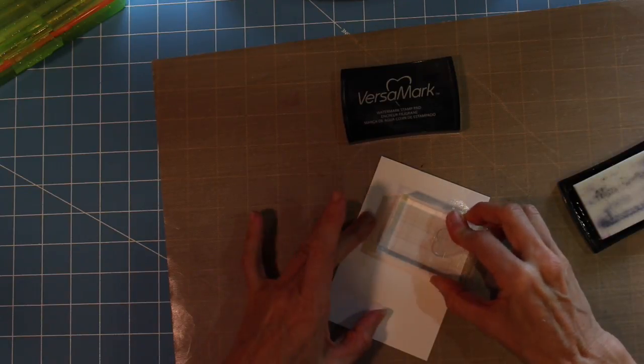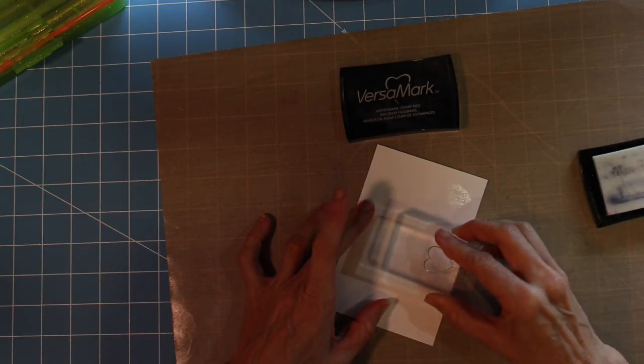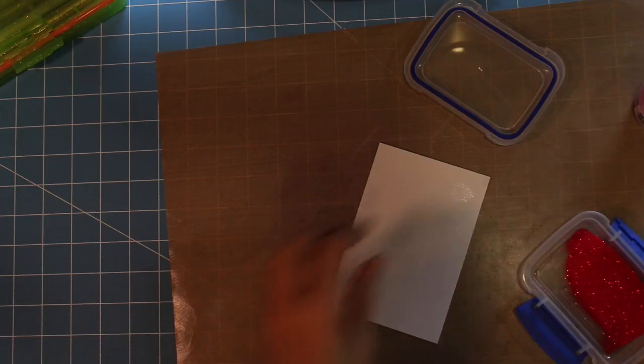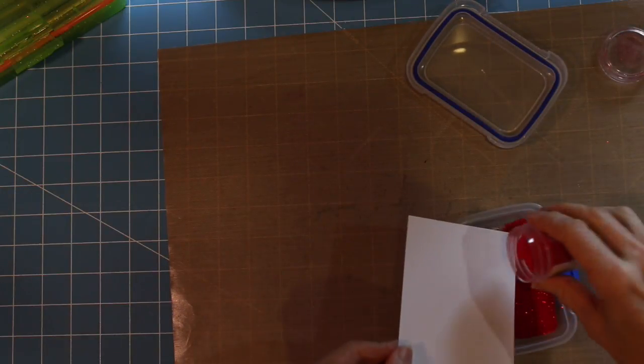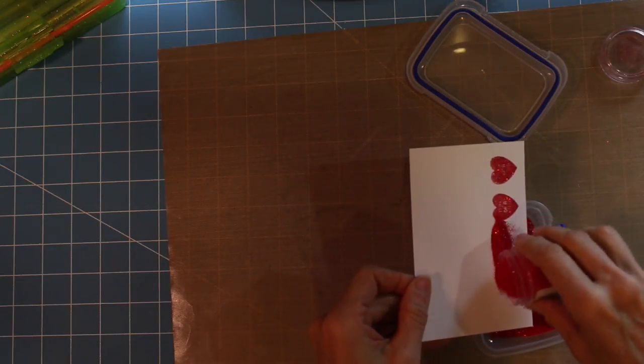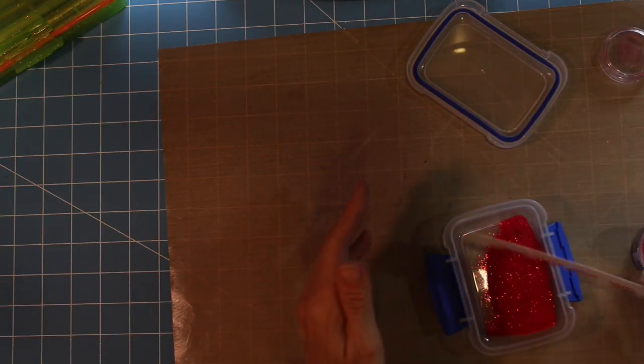I'm going to stamp out the images on my card using VersaFine ink, and I'm creating several hearts that I'm going to use on this project. I'll have plenty for other projects. I'm using the red tinsel embossing powder to fill in the heart images.